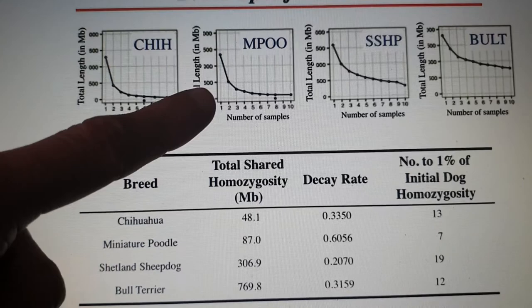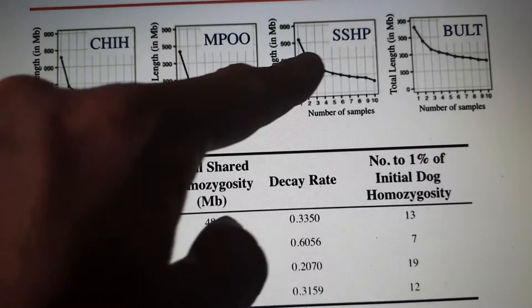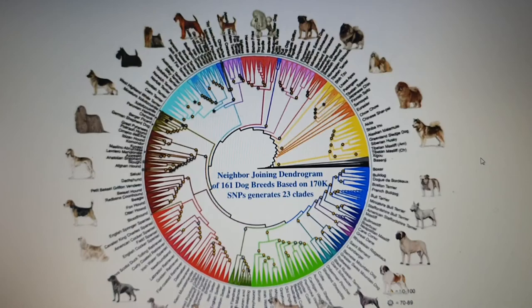For example, the Chihuahua has quite a big spread in homozygosity, whereas the Bull Terrier has quite a limited spread. The Shetland Sheepdog is in between, and the Miniature Poodle is closer to the Chihuahua, as you can see.